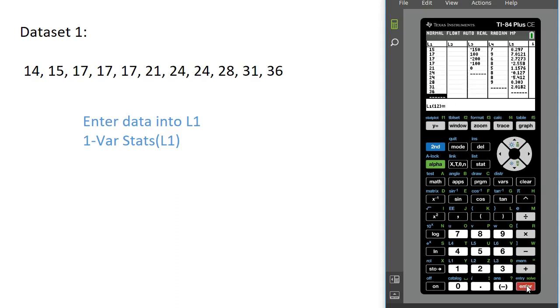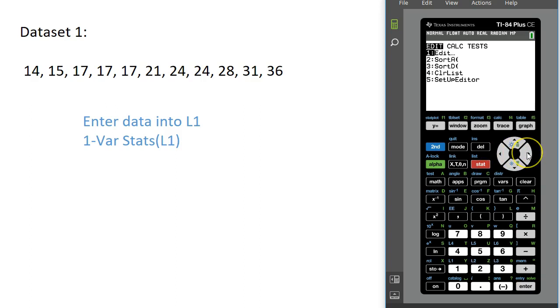Once we have all of our data in List 1, we're going to press the Stat button again, go over to Calc, and select one variable stats. Under List, we want it to say List 1.